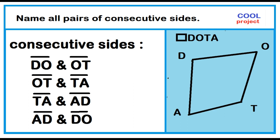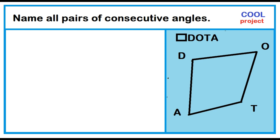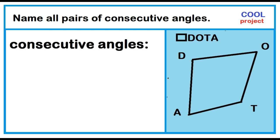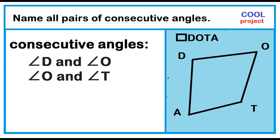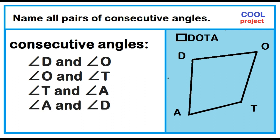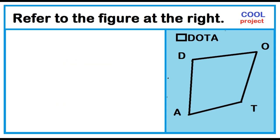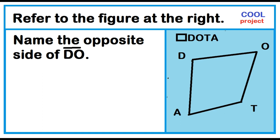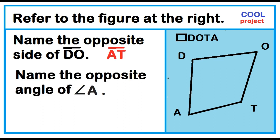Name all pairs of consecutive angles. The consecutive angles are: angle D and angle O, angle O and angle T, angle T and angle A, and angle A and angle D. Refer to the figure at the right. Name the opposite side of segment DO — segment AT. Name the opposite angle of angle A — angle O.